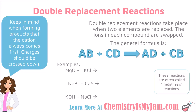The ions in the compound get swapped. You have the general formula here. If you have a compound that is made up of AB and a compound that is made up of CD, remember that the positive ion is always written first, followed by the negative ion. In the products, A and D end up together. The positive ion from here ends up with the negative ion from here, and the other compound is the positive ion from here with the negative ion from here. So both elements within the compound get replaced and the ions are swapped.